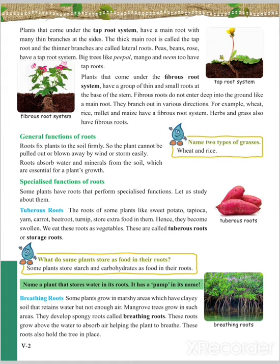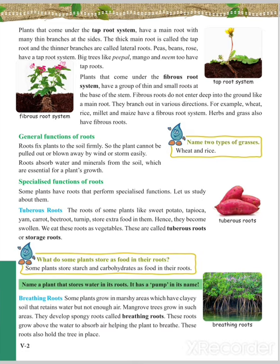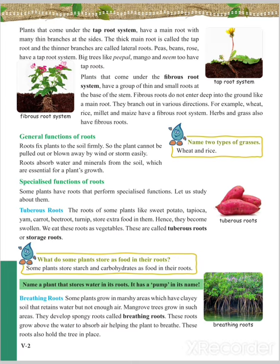Plants that come under the fibrous root system have a group of thin and small roots at the base of the stem. Fibrous roots do not enter deep into the ground like tap roots; they branch out in various directions. For example, wheat, rice, millet, and maize have fibrous root systems, and some herbs also have fibrous root systems.